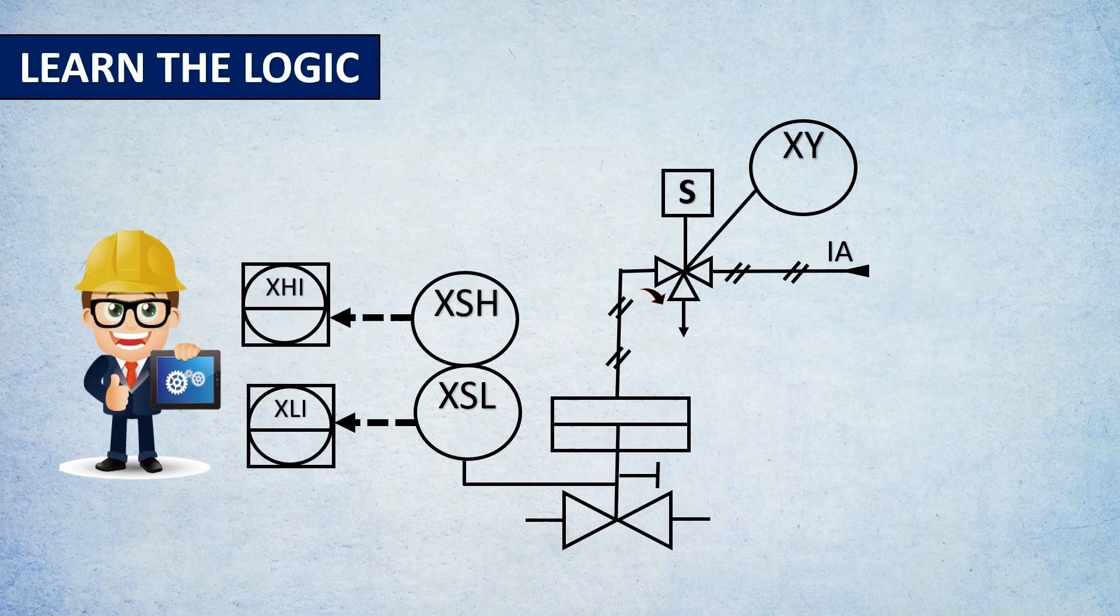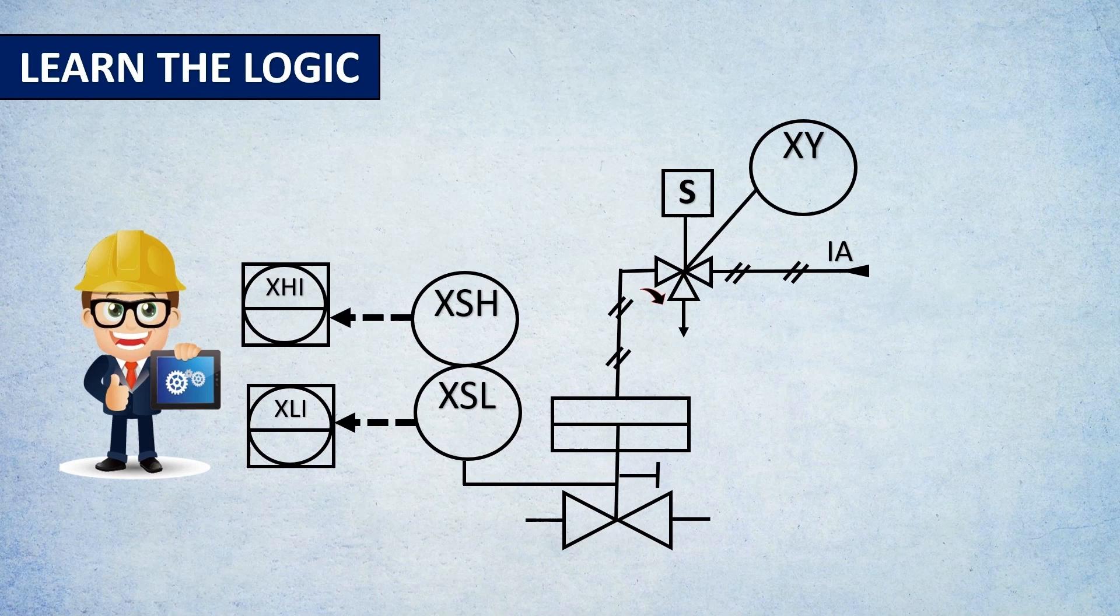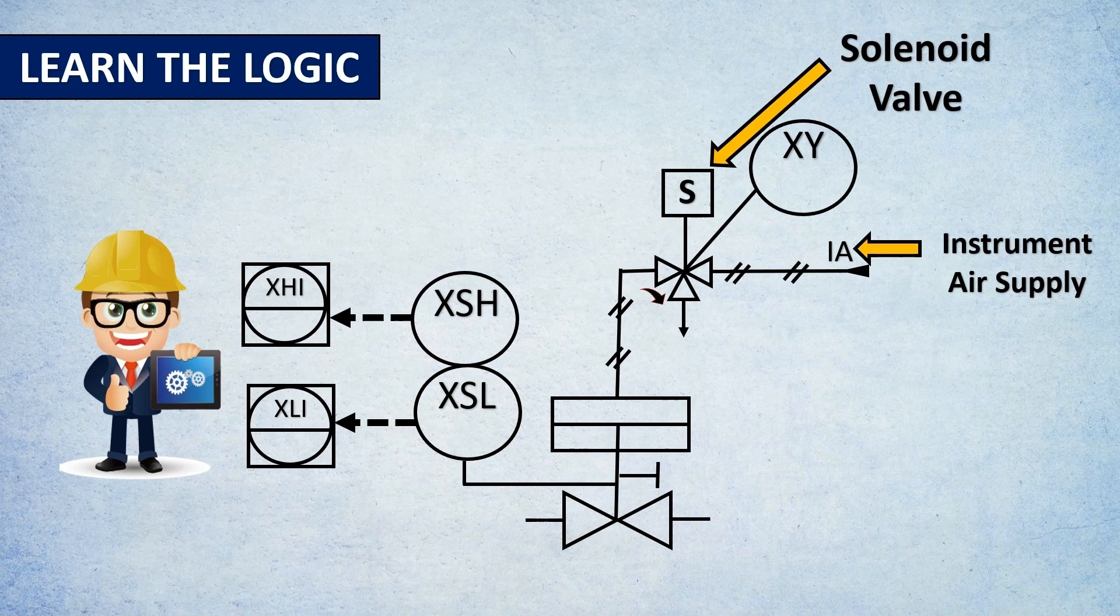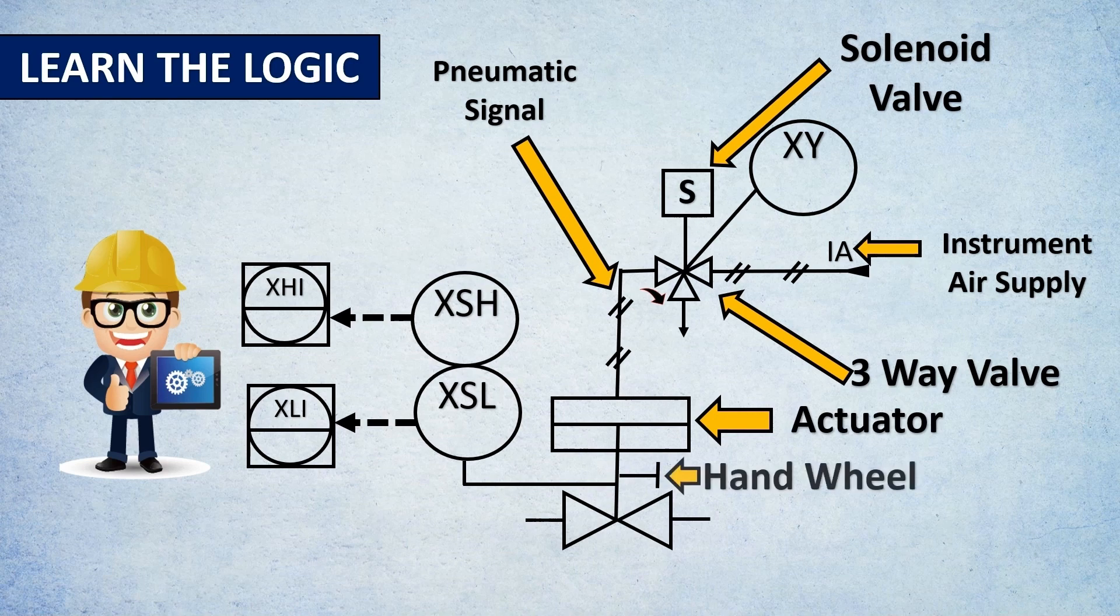Let's understand the proper logic of how this valve works, especially the de-energizing path. Here's our instrument air supply, then the solenoid valve. What type of solenoid valve is this? This is a three-way solenoid valve. Then you have a pneumatic signal that goes to your actuator, a hand wheel, and the body.